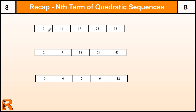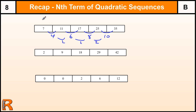So, here's the first one. We are adding 4, 6, 8, 10. Those go up by 2 each time, which tells us this sequence is based on n squared. If I write n squared: 1, 4, 9, 16, 25.